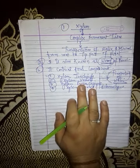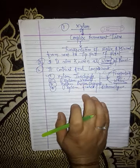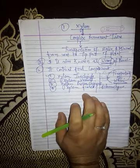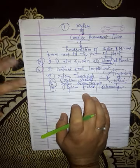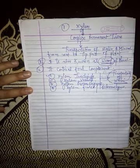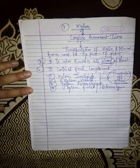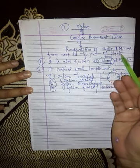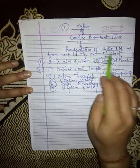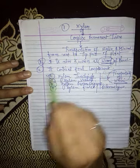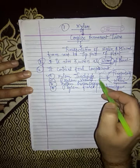Hello students, today I am taking the next lecture on complex permanent tissue. Yesterday I taught you about xylem and phloem, and I explained about xylem in the last lecture. Xylem is a type of complex permanent tissue and it helps in the transportation of water and minerals from root to the part of the plant. It is also known as wood plant.